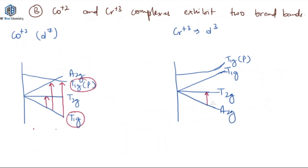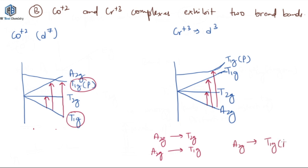For chromium d3, there are three transitions: A2g to T2g, A2g to T1g, and A2g to T1g(P). Since none of these transitions occur between levels of the same symmetry, all three are allowed, giving three bands. So chromium exhibits three bands, not two. Statement B was half correct and half incorrect — it says two broad bands, but chromium gives three bands.